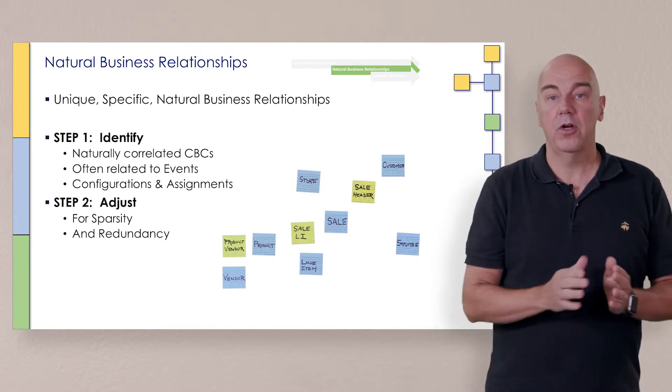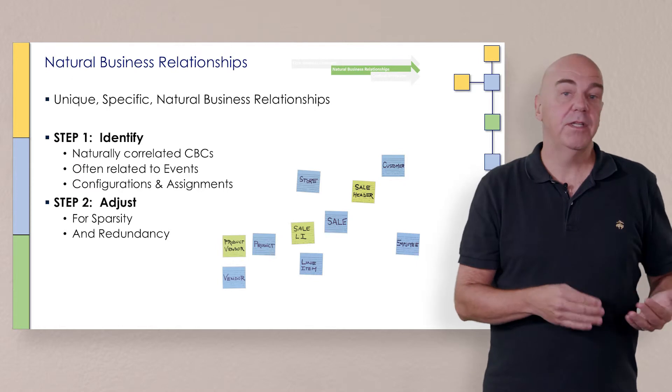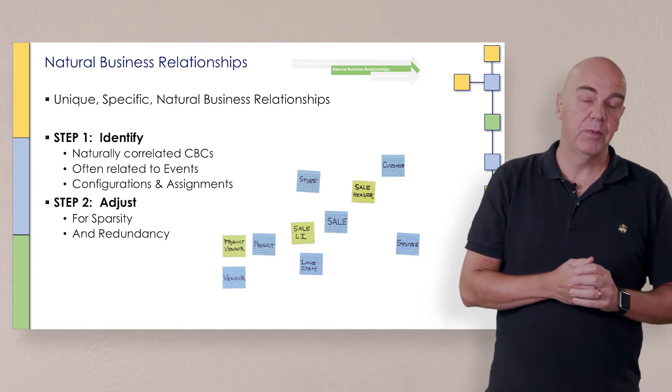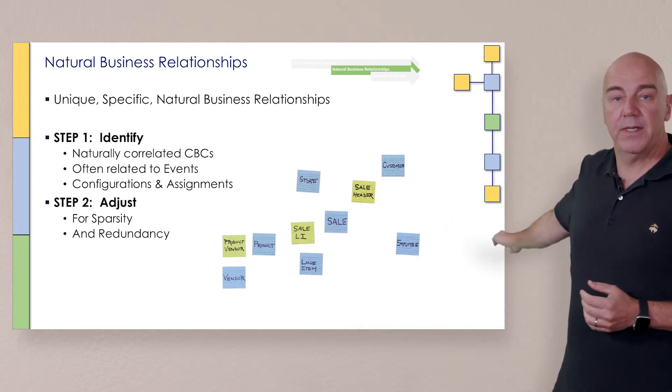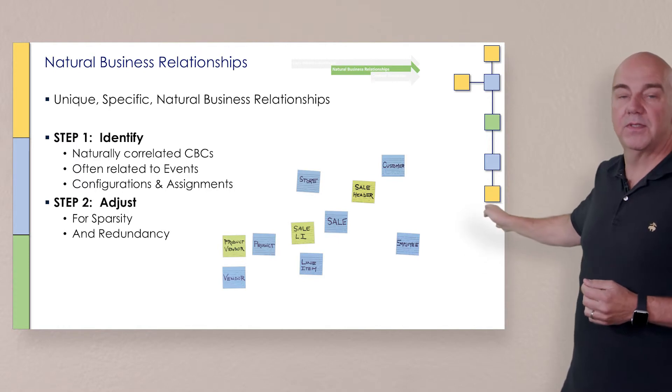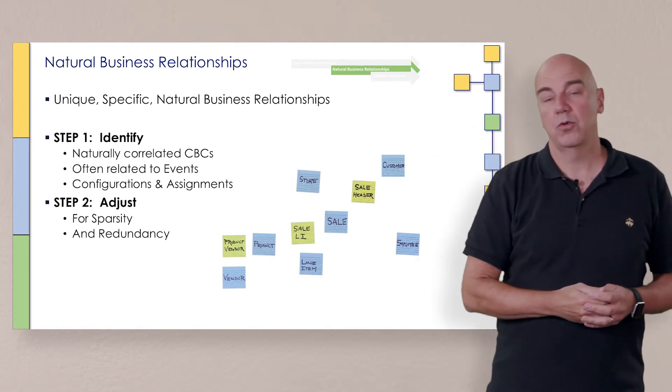Sparsity meaning when there are records missing, and redundancy meaning when things get repeated over and over and over again. So as you'll notice, what we did on the board, we ended up splitting out the relationship from a sale to its products away from the sale to its customer, store, and employee.